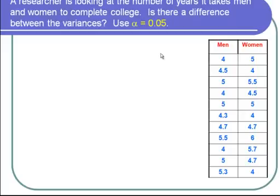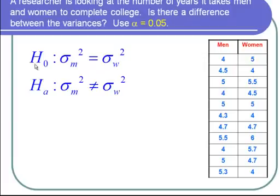So since we are testing to find out if there is a difference between variances, our null hypothesis H0 is sigma squared for the men is equal to sigma squared for the women. The men's variance equals the women's variance. And the alternative hypothesis HA is sigma m squared is not equal to sigma w squared,